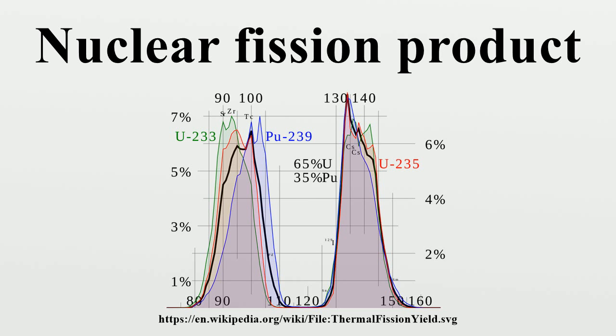Each fission of a parent atom produces a different set of fission products' atoms. However, while an individual fission is not predictable, the fission products are statistically predictable. The amount of any particular isotope produced per fission is called its yield, typically expressed as percent per parent fission. Therefore, yields total to 200 percent, not 100 percent.